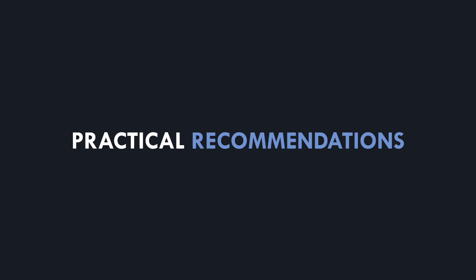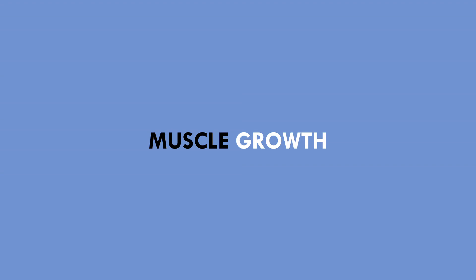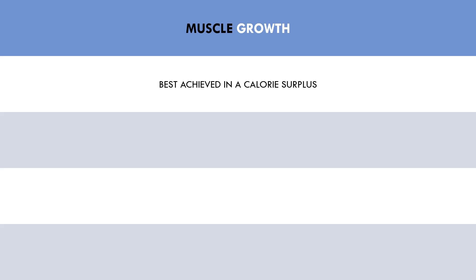So what practical recommendations can we conclude regarding total daily calories and body composition? The recommendations given are dependent on the individual's specific goals at any given point in time. First, let's discuss calorie intake for the goal of maximizing muscle growth. As we mentioned, muscle growth is best achieved eating in a calorie surplus. However, the trade-off is that during a calorie surplus, the majority of weight gain will actually be fat, while only a small portion will be muscle mass. Furthermore, we know that it takes a long period of time to see significant increases in muscle mass. Therefore, as a practical recommendation, a slow rate of weight gain for an extended period of time is probably going to be our best option for muscle growth.